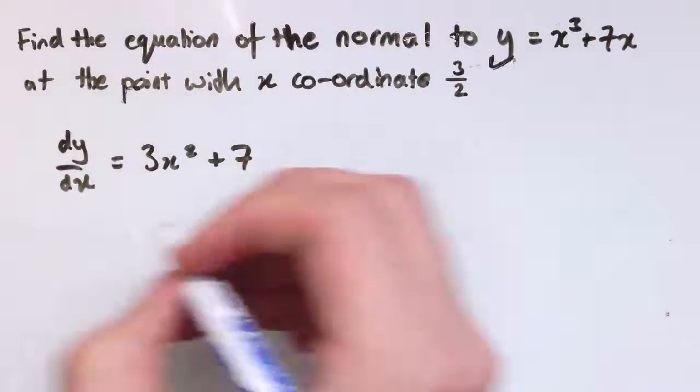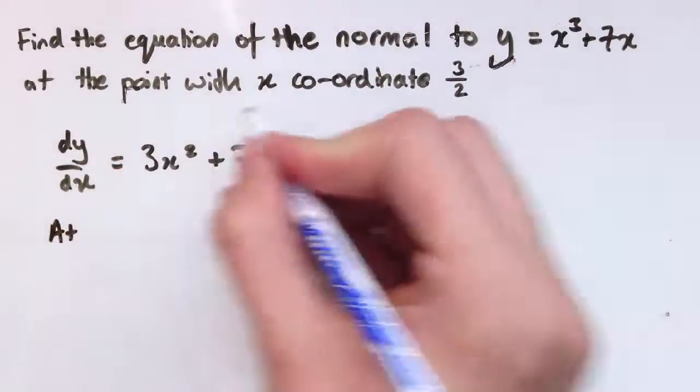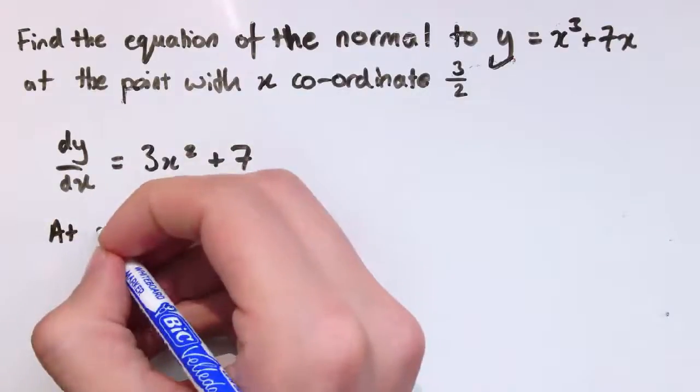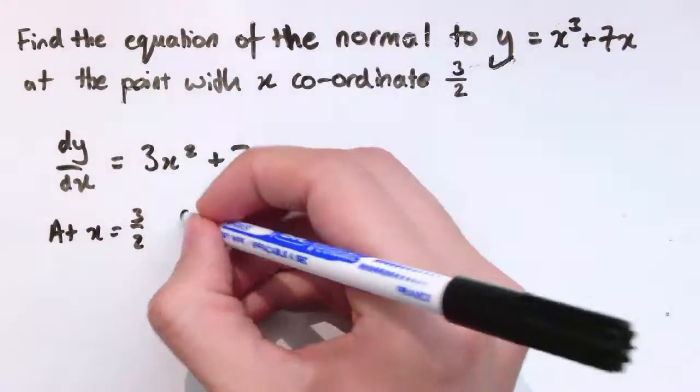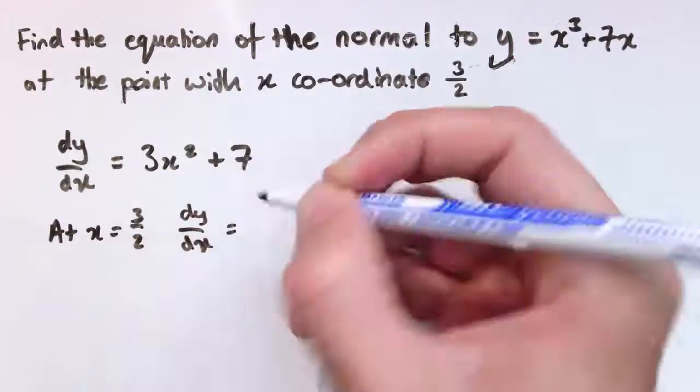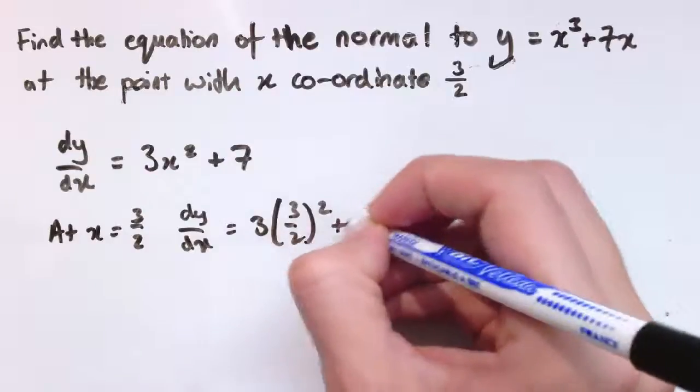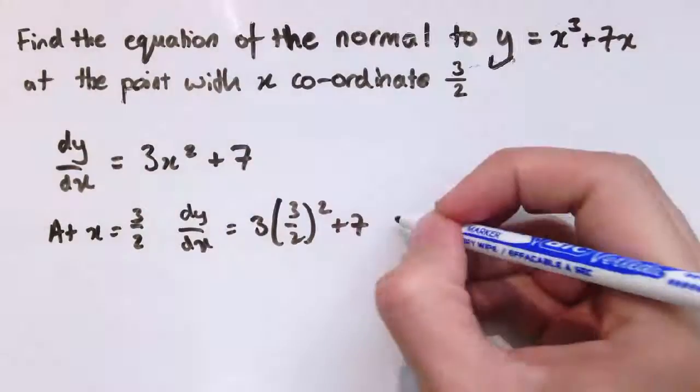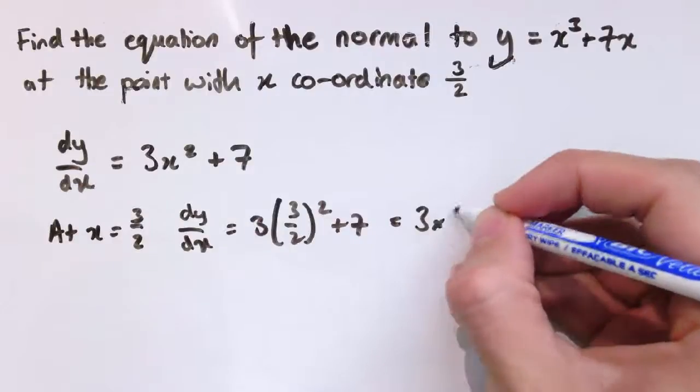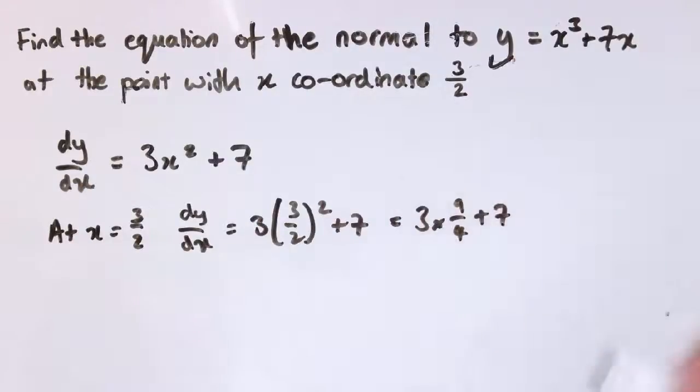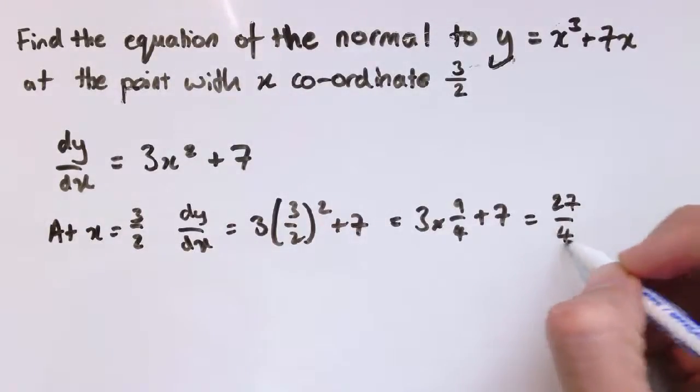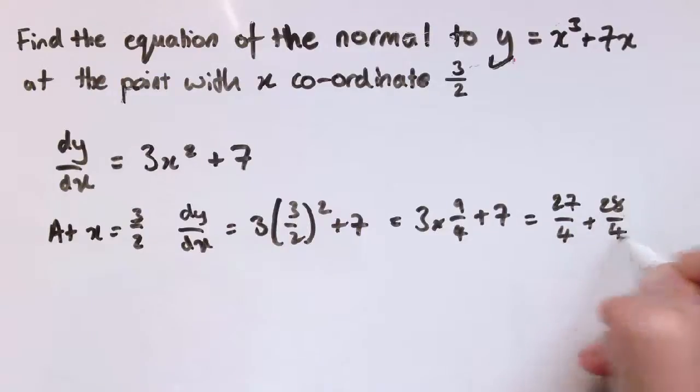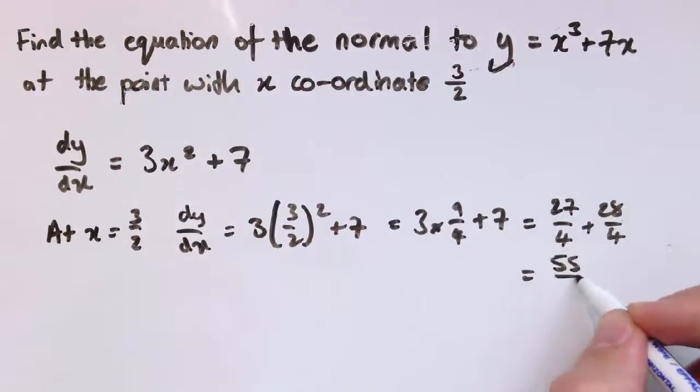And at the point we're looking at, it's got x coordinate 3 over 2. So at x equals 3 over 2, we're going to have dy by dx equals 3 times 3 over 2 squared plus 7. And that's 3 times 9 over 4 plus 7. So this is 27 over 4 plus 7, which is 27 over 4 plus 28 over 4, which is 55 over 4.